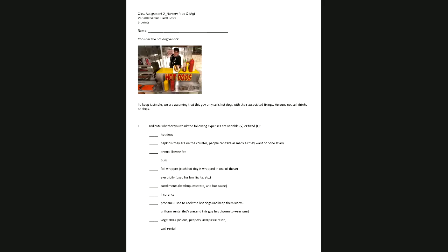Welcome back. This video is a companion to the previous video on revenue and expenses. This video focuses on a hot dog vendor in New York City. The purpose of this exercise is to take a closer look at variable and fixed costs using a relatively simple example. We are assuming that this vendor sells only hot dogs with their associated fixings — no drinks or chips.